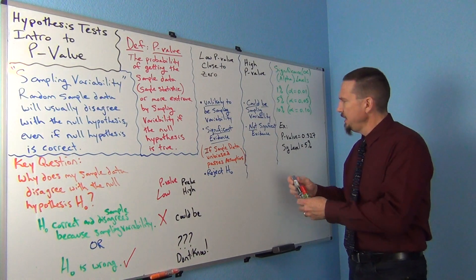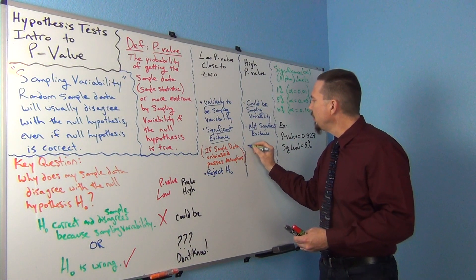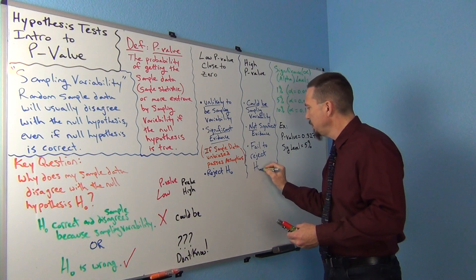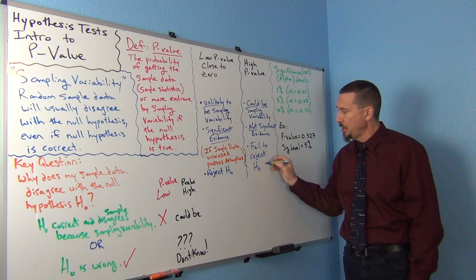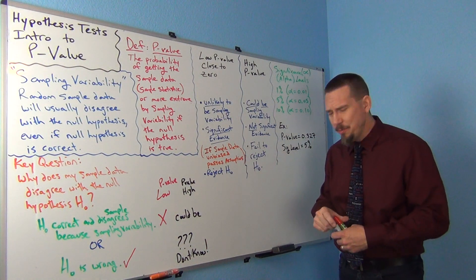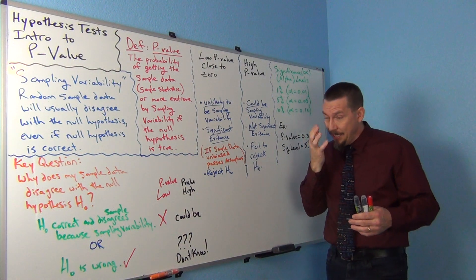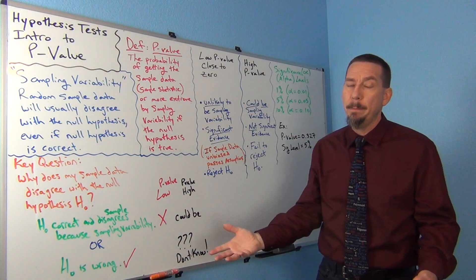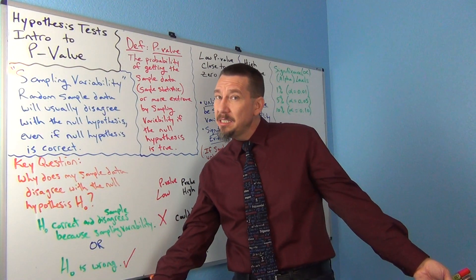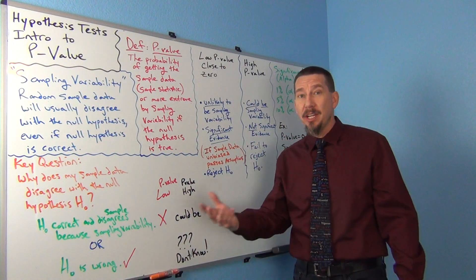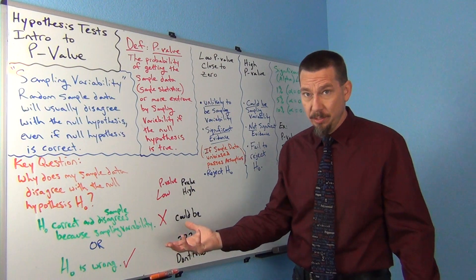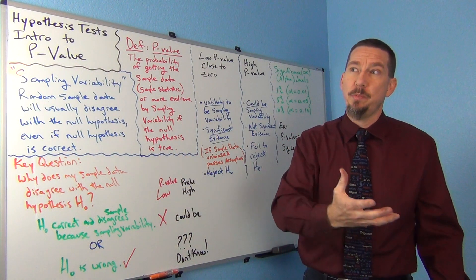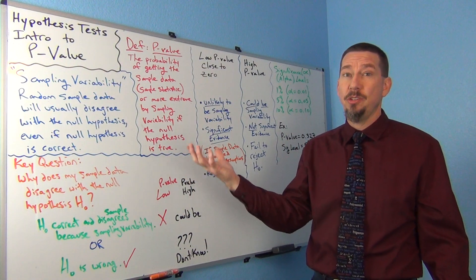We don't have enough evidence to reject the null hypothesis. What we say in that case is we fail to reject the null hypothesis. We don't say the null hypothesis is correct — we say fail to reject the null hypothesis. A good way to think about it is like a court of law. If a person was found not guilty because there wasn't enough evidence to convict them, does that mean they were totally innocent? Probably not. That doesn't mean they're innocent — it just means they didn't have enough evidence to convict them.